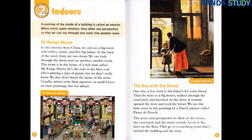A painting of the inside of a building is called an interior. When artists paint interiors, they often use perspective so that we can see through one room into another room. In this interior from China, we can see a big room with tables, chairs and five big lamps. At the back of the room, there are two doors — we can look through the doors and see another, smaller room. The room is in the house of a rich man called Mr. Kong. Maybe he's the man in the blue coat who's playing a type of guitar, but we don't really know. We also don't know the name of the artist. Usually artists write their signature in small letters on their paintings, but not always.